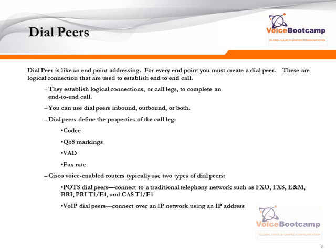The Cisco voice-enabled routers typically use two types of dial peers. A POTS dial peer is a connection toward the plain old telephony system, such as your PBX, another router, maybe a telephone line, or anything else connected via a POTS line, which connects your traditional telephone network using FXO, FXS, E&M, BRI, PRI, T1, E1, and CAS T1/E1.